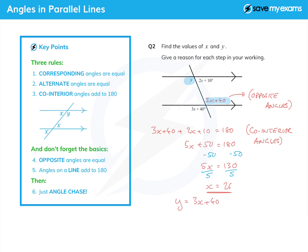And so I can now just write down that y is equal to 3 times 26 plus 40. And 3 times 26 is 78, plus 40 is 118. And I have found x and y quite happily.